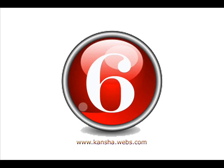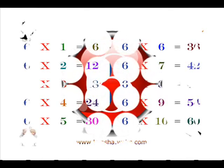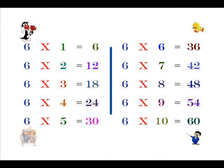Let's learn the table of six. Six fours are twenty-four. Six fives are thirty.